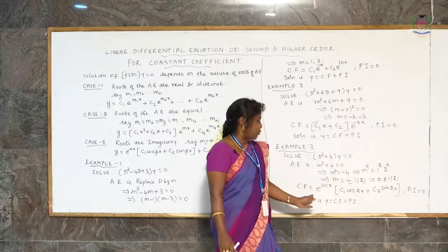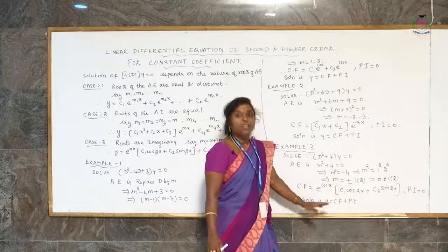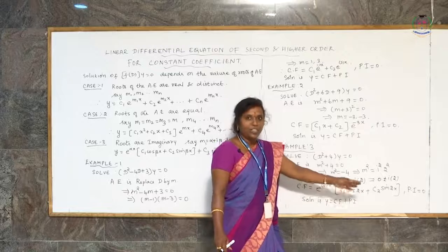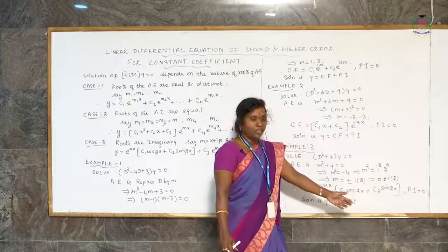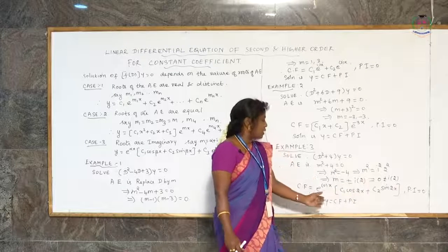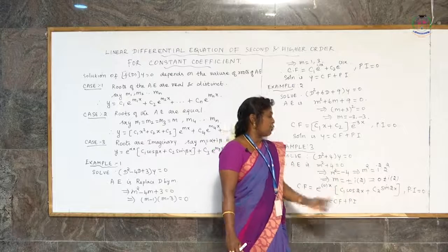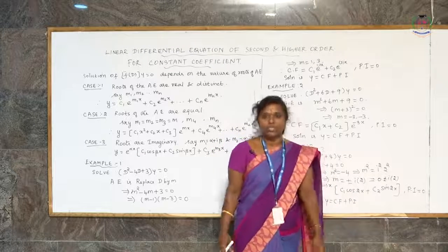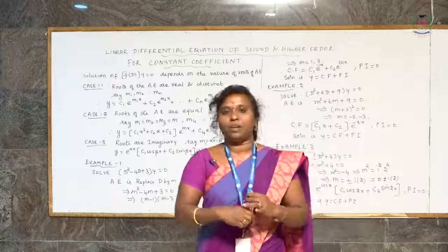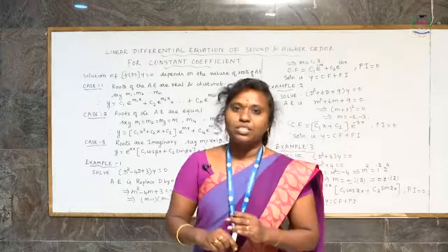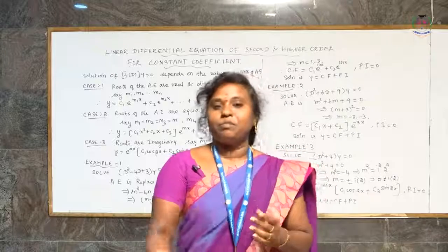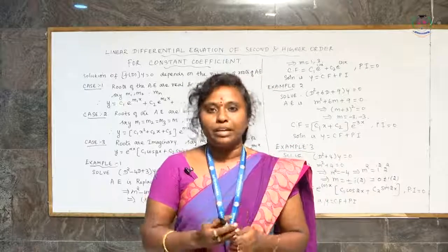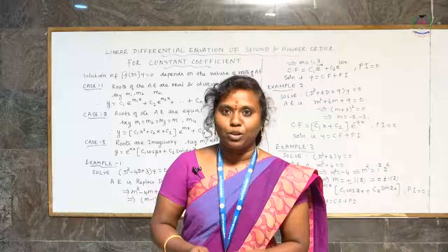The solution is written in terms of complementary function and particular integral. Therefore y equals c₁cos 2x plus c₂sin 2x. Hope you all enjoyed this video lecture. In the future, we can see the particular integral problems. Thank you.